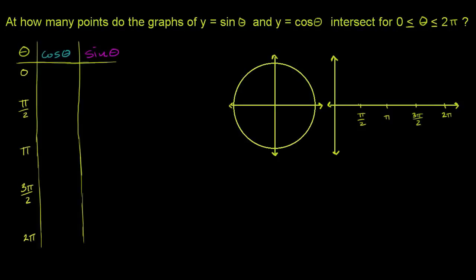We're asked: at how many points did the graph of y equals sine of theta and y equals cosine theta intersect for theta between 0 and 2 pi? The range is 0 ≤ θ ≤ 2π, so we're going to include 0 and 2 pi in the possible values for theta.